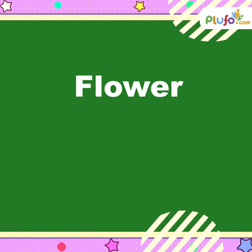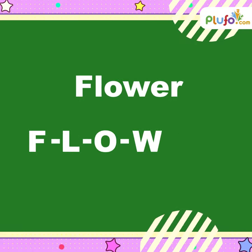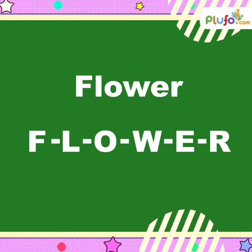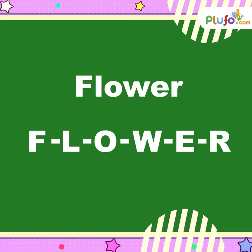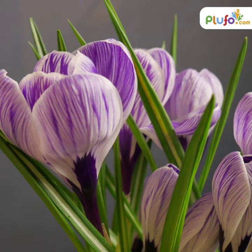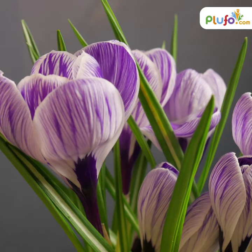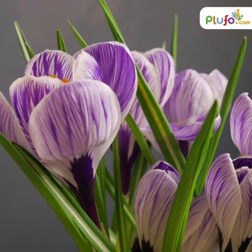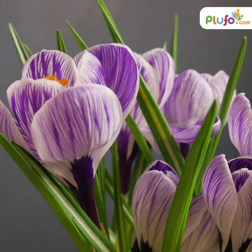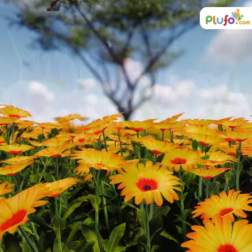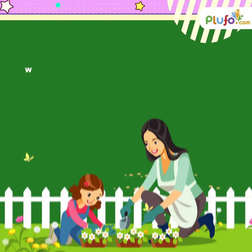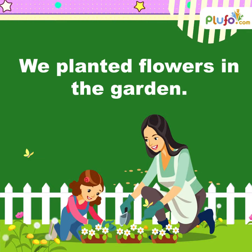Second, flower — F-L-O-W-E-R. The meaning of the word flower: the colored part of a plant or tree from which seeds or fruit grow. Use of this in a sentence: we planted flowers in the garden.